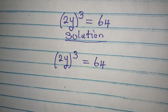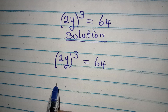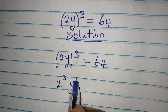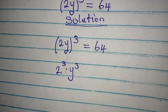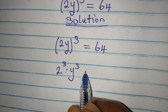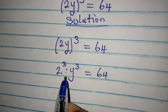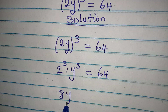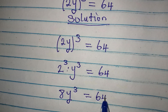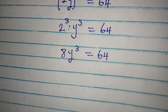To get the complete solution, I have to open this bracket. So we have 2³ multiplied by y³, because this power applies to both 2 and y. This equals 64. Continuing, we have 8y³ = 64, because 2³ = 8.